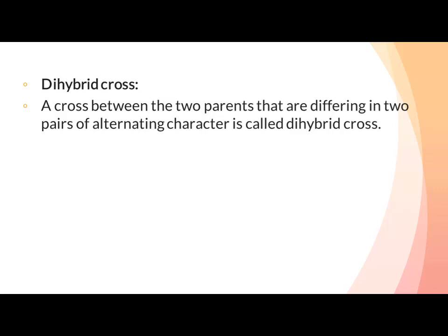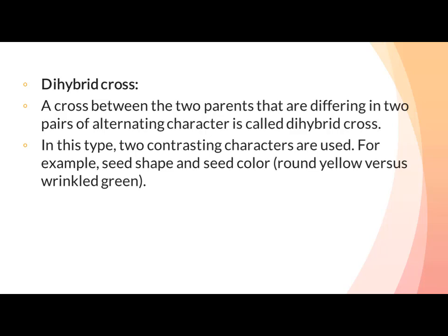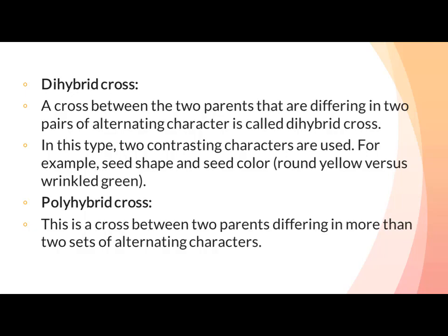Dihybrid Cross: A cross between two parents differing in two pairs of contrasting characters is called dihybrid cross. In this type, two contrasting characters are used — for example seed shape and seed color, or pod shape and pod color, or height and flower color. Poly Hybrid Cross: This is a cross between two parents differing in more than two sets of contrasting characters.